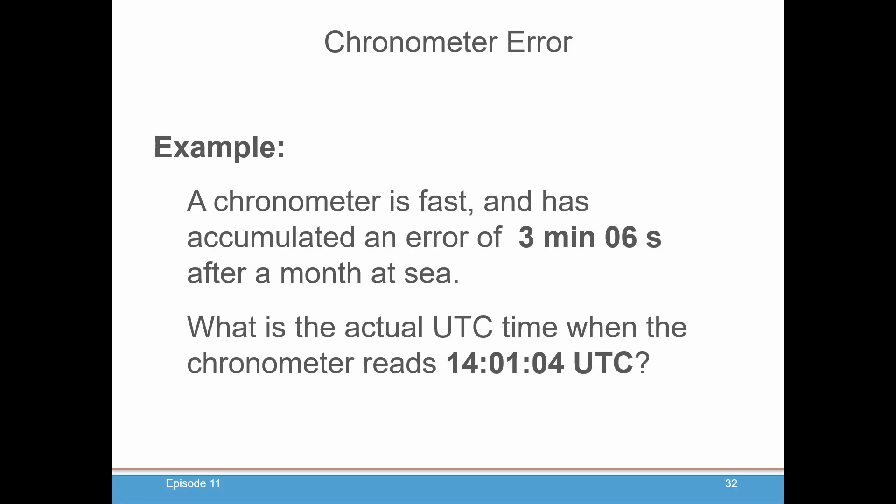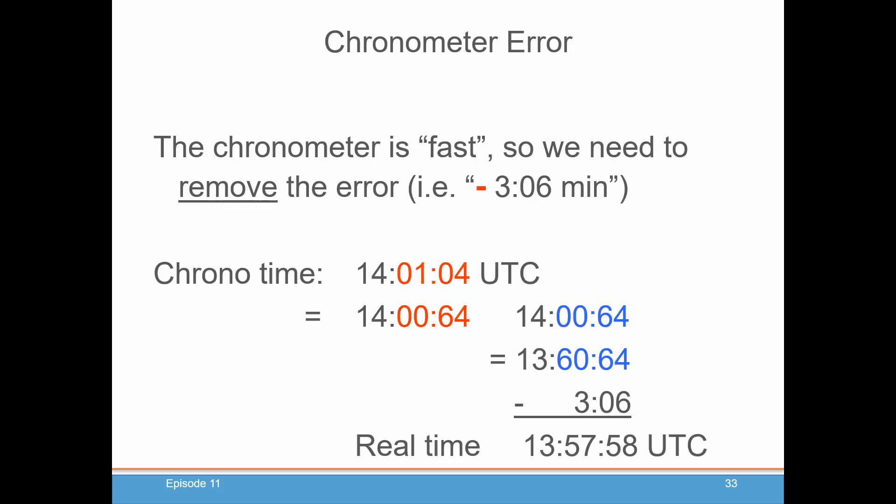In order to establish the exact time, the total number of seconds of error need to be calculated since the day of departure. This is your chronometer error and it does accumulate during the trip. For example, a chronometer is fast and has accumulated a total of 3 minutes and 6 seconds of error after a month at sea. What is the actual UTC time when the chronometer reads 14:01:04 UTC? Well, the chronometer is fast, so we need to remove that error. We have to subtract the extra 3 minutes and 6 seconds of time that the chronometer pushed us forward because it was fast. We take our chronometer time and we want to subtract 3 minutes from it, but of course, you can't subtract 3 minutes from 1 minute. You have to steal 60 minutes from your time to get something greater than 3 minutes. And then you would be able to subtract your time and get the real time.